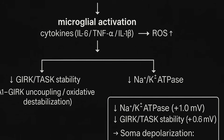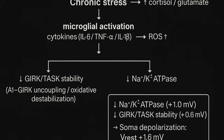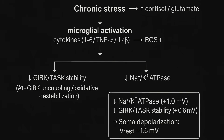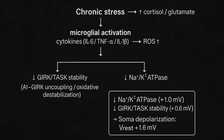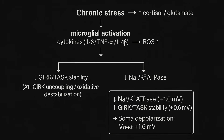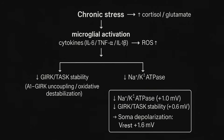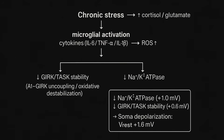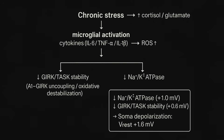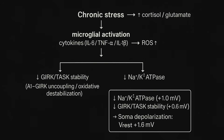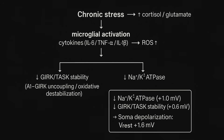During chronic stress, elevated cortisol and glutamate levels activate microglia, leading to the release of pro-inflammatory cytokines and reactive oxygen species. The resulting oxidative stress lowers ATP levels, weakens the activity of the sodium-potassium pump, and destabilizes GIRK and TASK channels, reducing potassium leak.